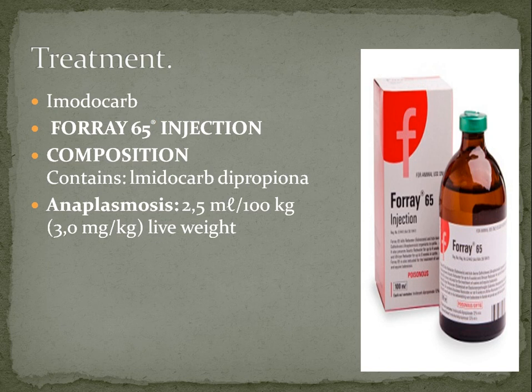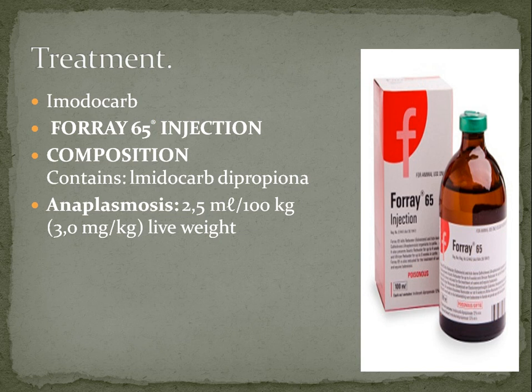After diagnosis, we proceed to treatment. The usual treatment of anaplasmosis is imidocarb. In both cattle, equines, and even in human cases, the drug of choice is doxycycline. In the case of cattle, it is given in injection form intravenously. The composition contains imidocarb dipropionate; for anaplasmosis we give 2 to 5 mL per 100 kg or 3 mg per kg of the live weight of the animal. Thank you, this is all about anaplasmosis. Please subscribe to our channel for more interesting videos.